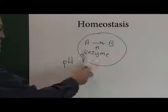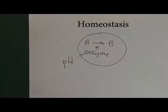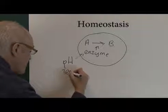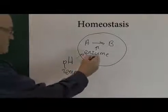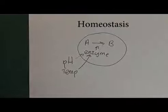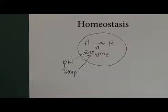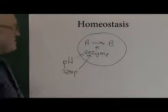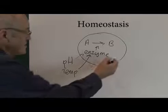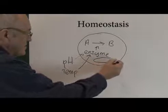So the enzymic environment must be correct in terms of pH. And also in terms of temperature — the temperature must be right for the enzymes to function. Enzymes do not like being too hot and do not like being too cold. They must be at just the right temperature.